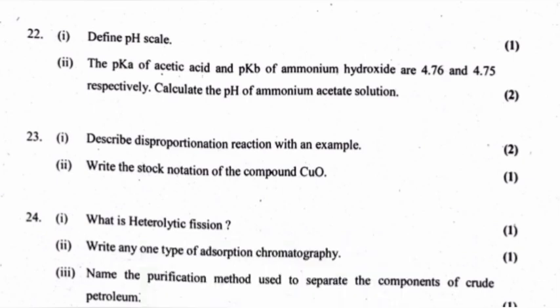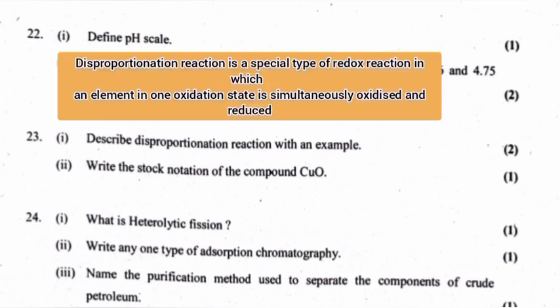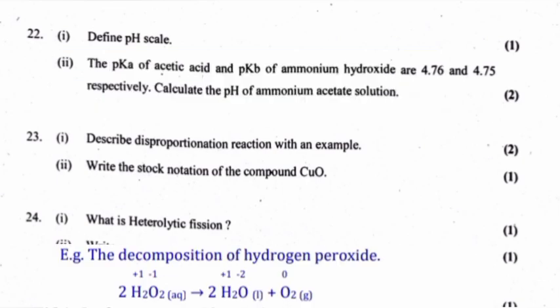Describe disproportionation reaction with an example. Disproportionation reaction is a special type of redox reaction in which an element in one oxidation state is simultaneously oxidized and reduced. Example: the decomposition of hydrogen peroxide.